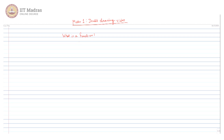A function means it's a special kind of relation where for one input we are getting some output. So there is something called input and we are getting some output. The set from where we are taking the inputs is called the domain, and where we are getting or expecting the output is called the codomain.